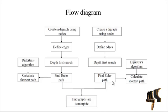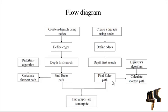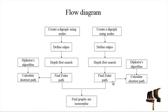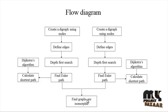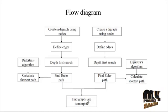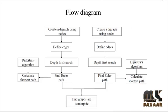Determine which node is the destination — start from the source node and reach the destination node, finding which path is the easiest and shortest to achieve the target. Finally, determine if the graphs are isomorphic by comparing both graphs. If the graphs are the same, that is isomorphic; if they are different, that is non-isomorphic. These are the overall processes of the program.